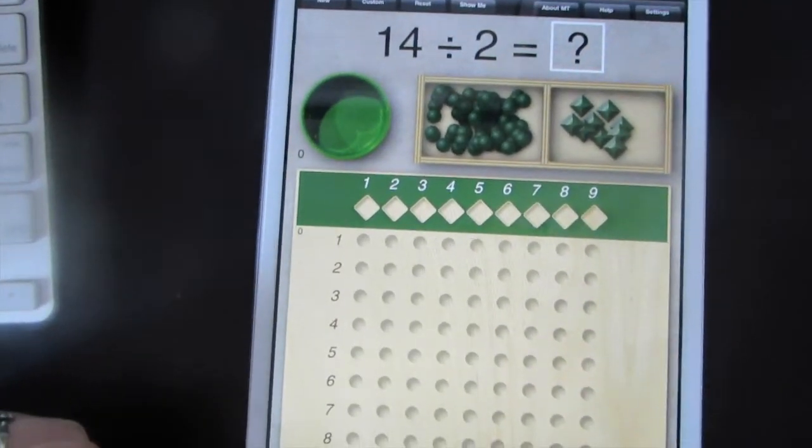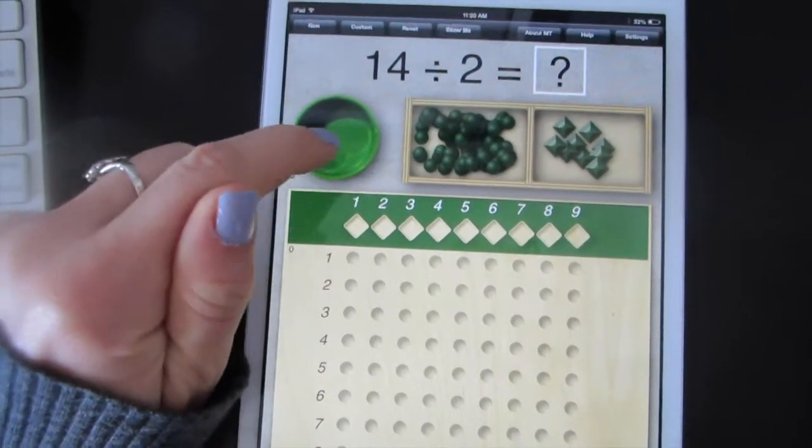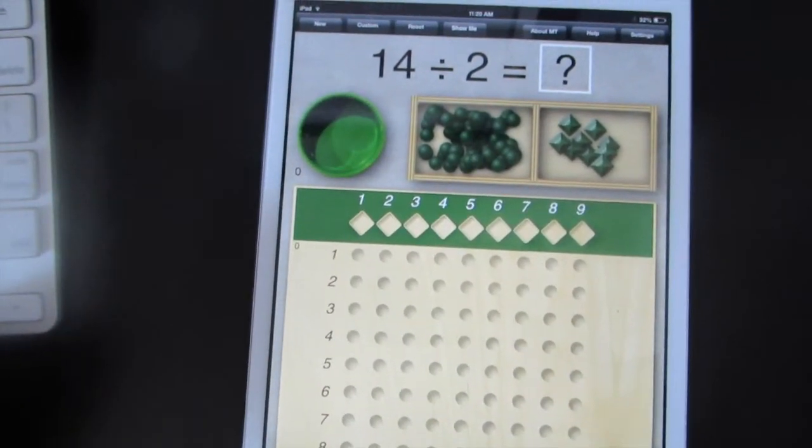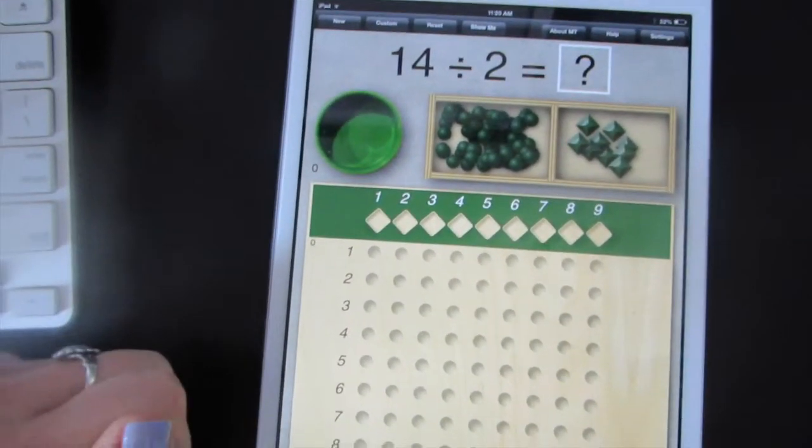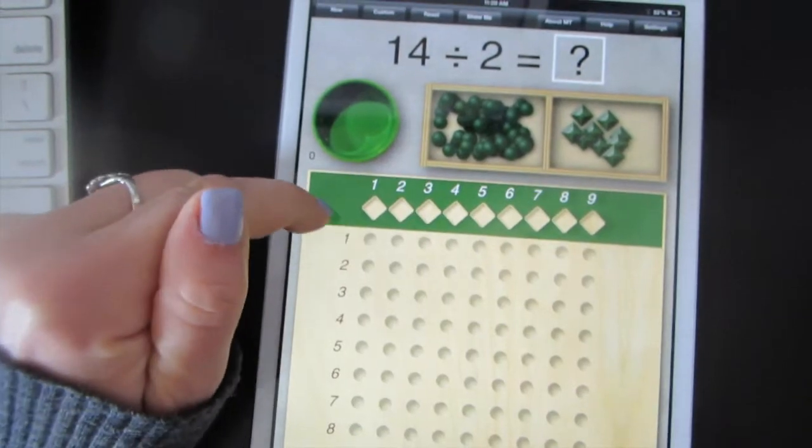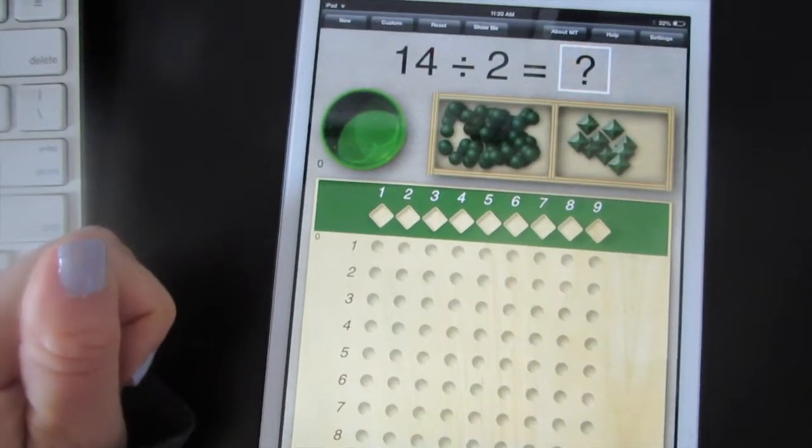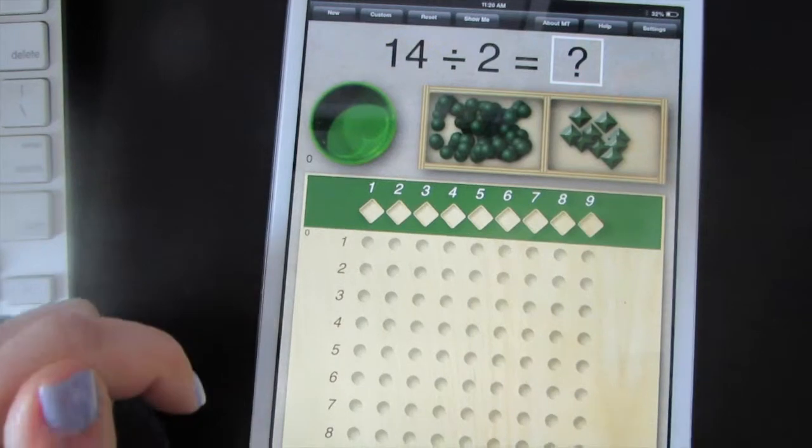The first thing you'll do is count out 14 balls into the bowl to represent how many you have in all. Then, you'll place two markers on this green line to show how many groups you're splitting 14 into.